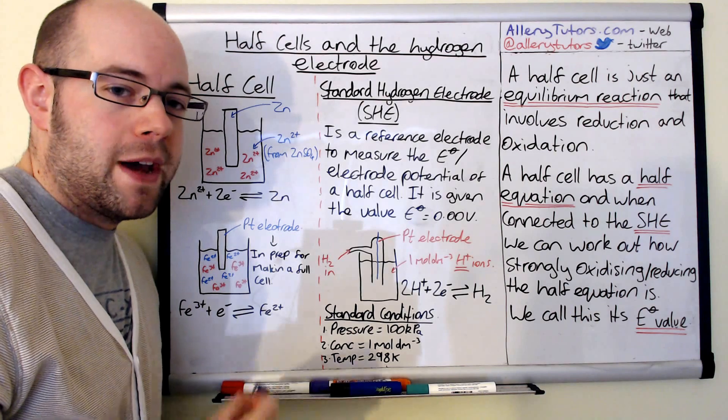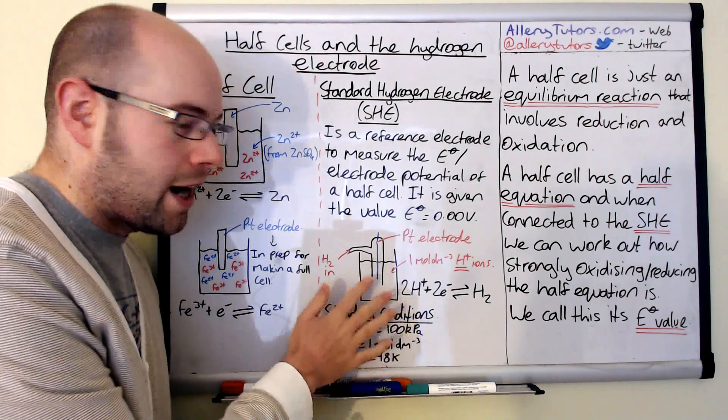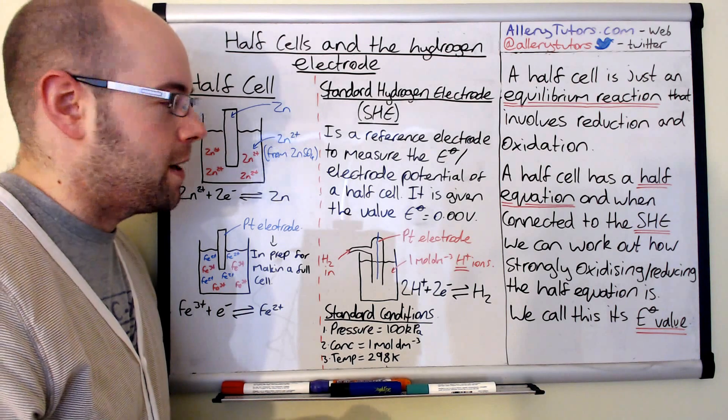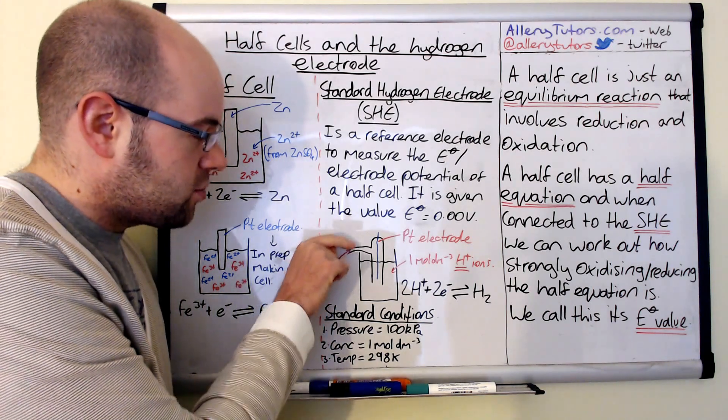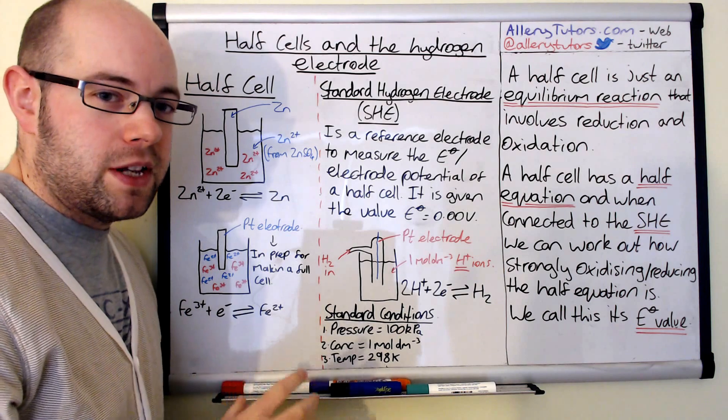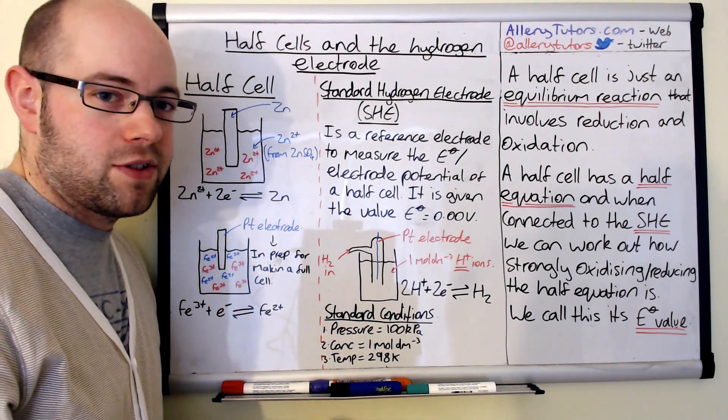H+ ions are formed from acids. So we would have something like hydrochloric acid in there, and it would have to be at one moles per dm cubed as well. We're going to push hydrogen gas into the top. H+ ions here.